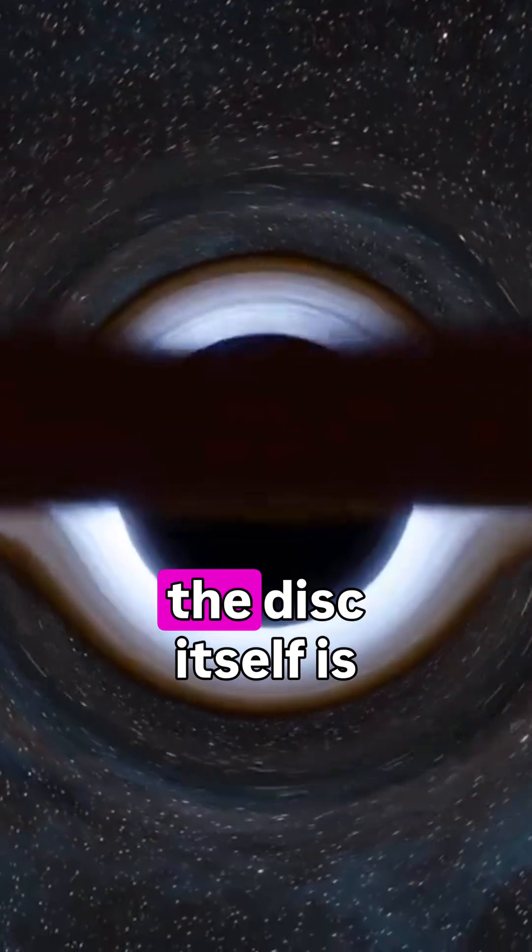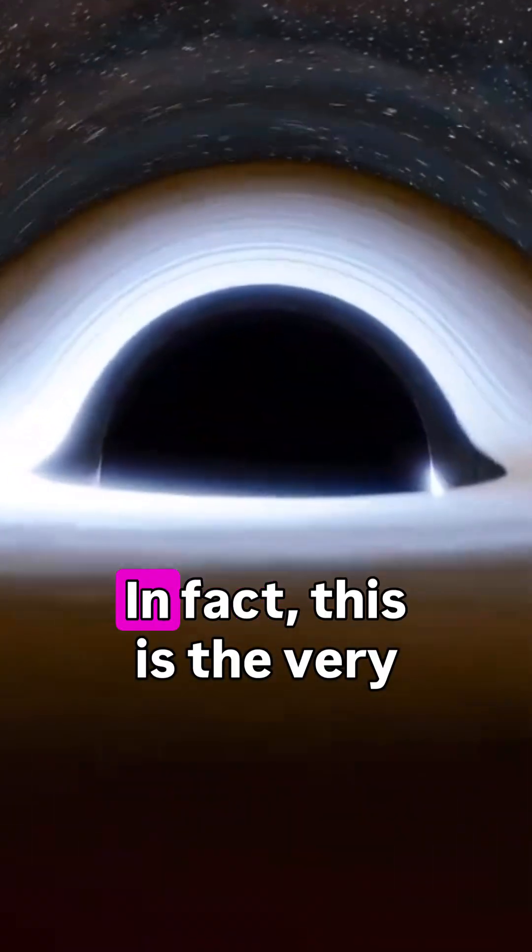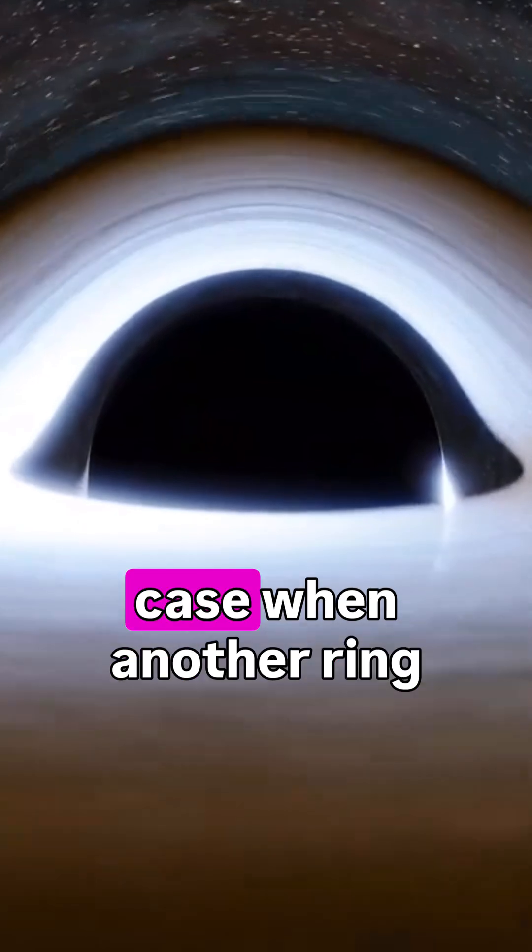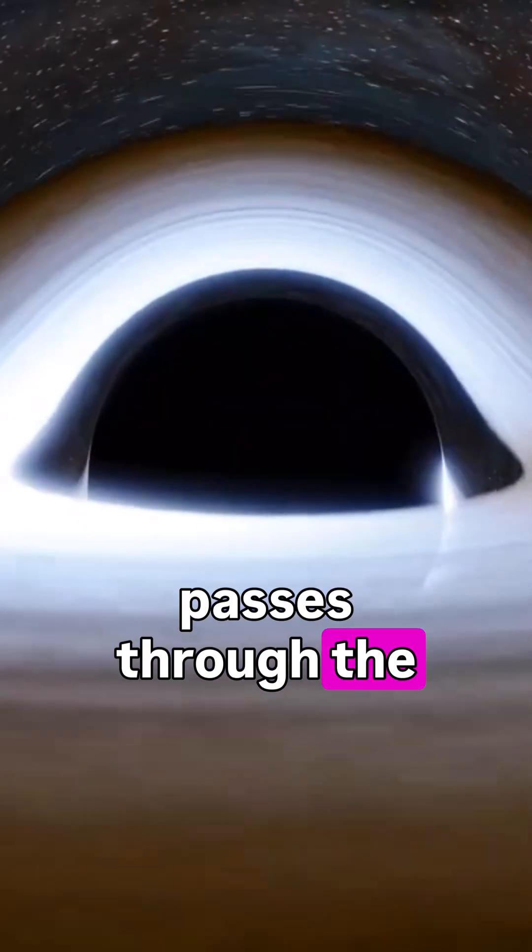This will happen even if the disk itself is parallel to our line of sight. In fact, this is the very case when another ring passes through the middle of the dark region.